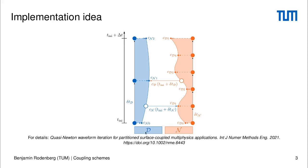In this picture we have on the left hand side a Dirichlet participant and on the right hand side a Neumann participant. You can also replace this with a fluid and a solid solver. The Dirichlet participant performs two time steps within one time window and for each time step data is generated.